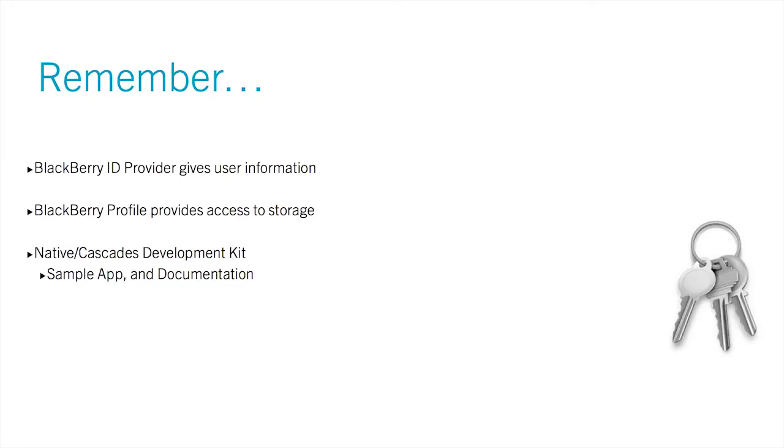To summarize: BlackBerry ID Provider gives you user information, and BlackBerry Profile Provider gives you access to storage. Currently there are only two, but over time this service will support multiple identity providers. Additional features such as third-party federation and authorization will be added in future releases of the platform. Cascades developers, you can see the API right now, and shortly we'll have a sample posted on the BlackBerry GitHub. Don't forget to subscribe to our YouTube channel. And if you think we are missing anything in our documentation or samples, or if you found this particularly useful, send us a tweet.